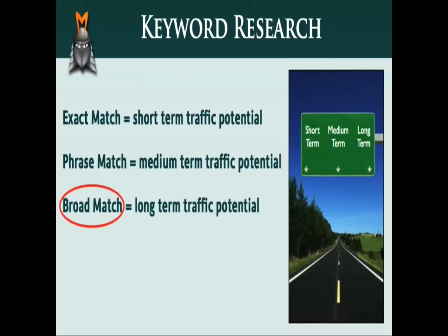The reason that we use broad match as a default is because most people use this information to assess the long-term feasibility of creating a business in a particular niche. When you're trying to decide whether or not a particular niche is worth targeting, the most relevant traffic factor is the long-term traffic potential of the keywords you're exploring. By assessing the long-term traffic potential in conjunction with other factors such as commerciality, you can then decide whether or not it is worth putting in the time and effort necessary to move forward with your business idea.